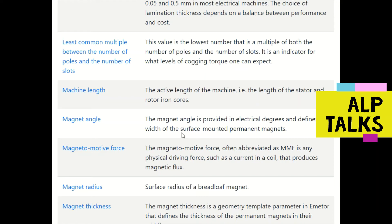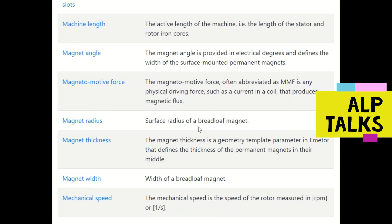Magnetomotive force (MMF) is any physical driving force, such as the current in a coil, that produces a magnetic flux. Magnetic radius is the surface radius — the radius of the breadth of a magnet. Most of the terms we deal with in BLDC relate to magnets, apart from the stator.